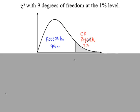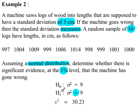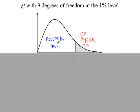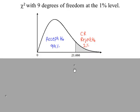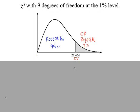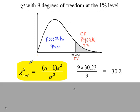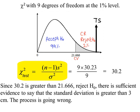The critical region is on the right-hand side, because H1 says the variance is greater than — the arrow points to the right. We look up 99% from the chi-squared tables with 9 degrees of freedom to find the critical value. Putting the values into the test statistic formula on page 12 of the AQA formula book, our test statistic is 30.2. Since 30.2 is greater than 21.666, we reject H0. There is sufficient evidence to say that the standard deviation is greater than 3, so the process is going wrong.